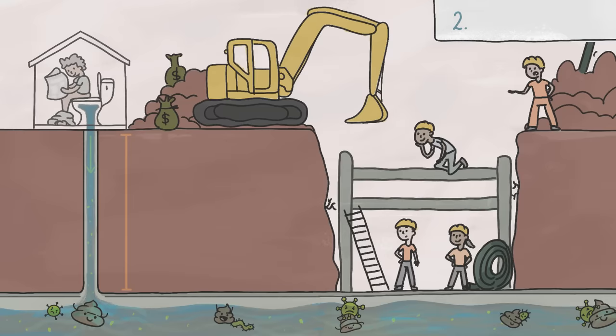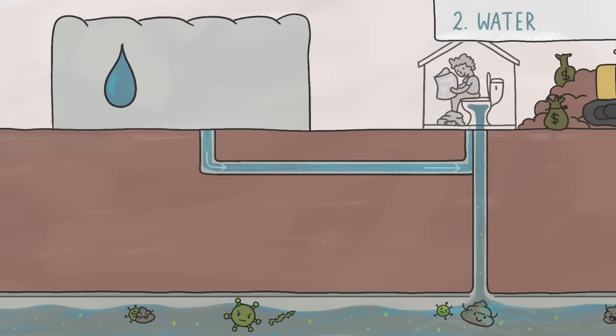Number two, sewer systems work by flushing poops away, but that requires a lot of water, as much as a hundred liters per person per day.